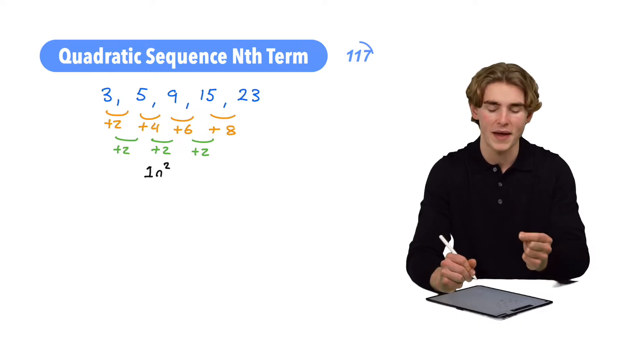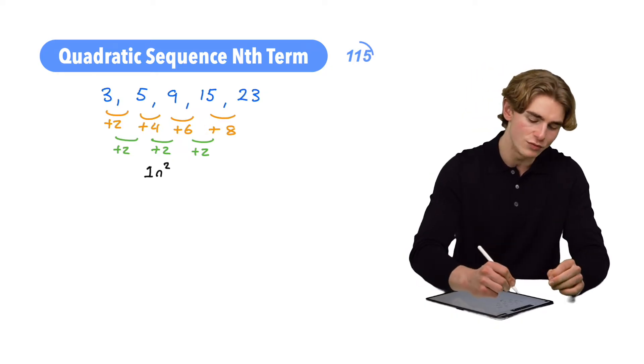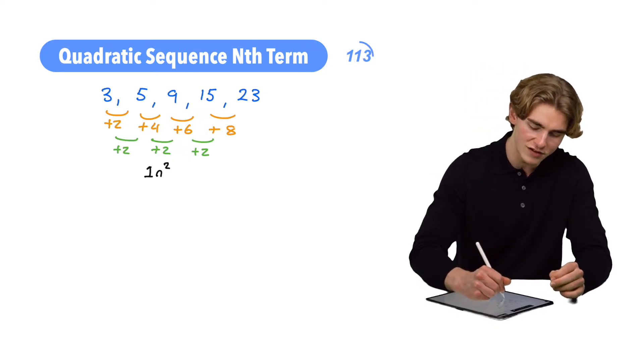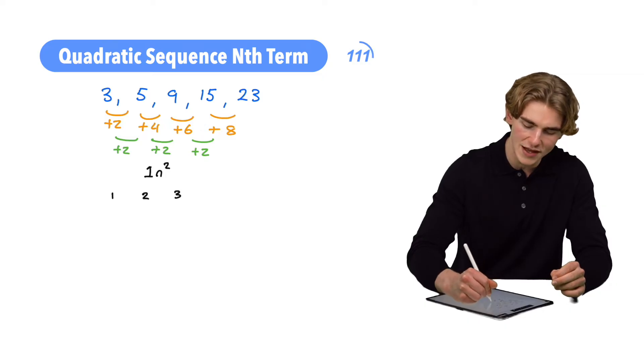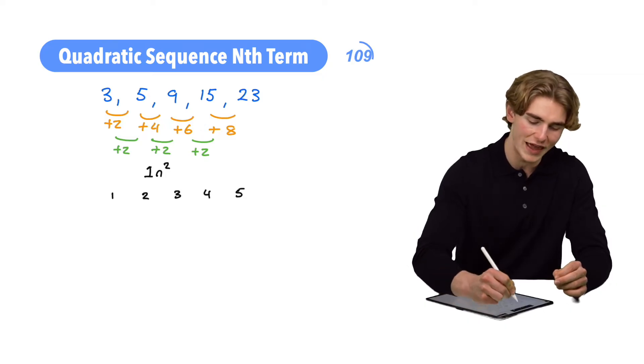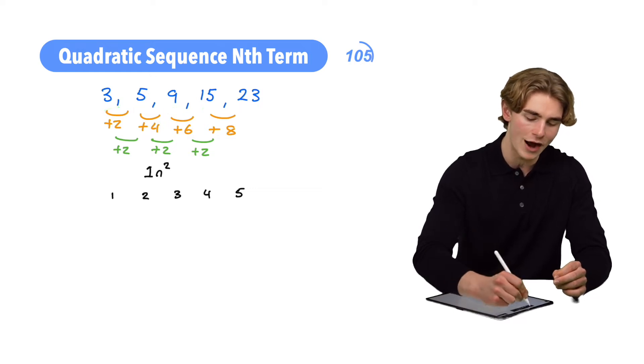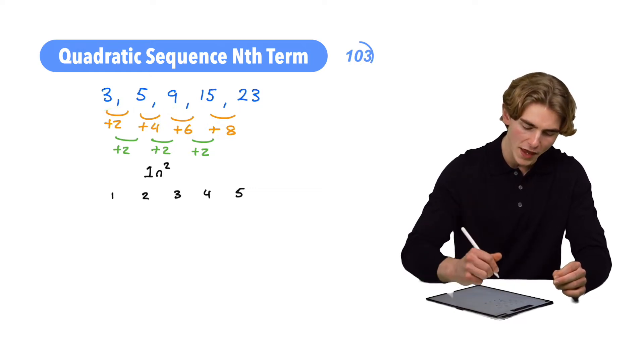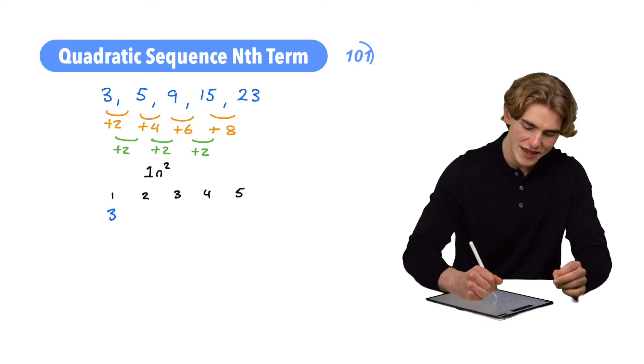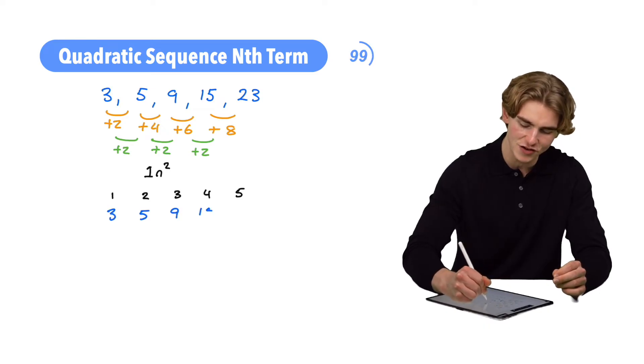Now, this part's going to be tricky, so pay close attention. What we're going to do is we're going to rewrite our term numbers, 1, 2, 3, 4, and 5. That's because we have five terms up here in our sequence, and then we're going to rewrite our original sequence. So our original sequence, that was 3, 5, 9, 15, 23.